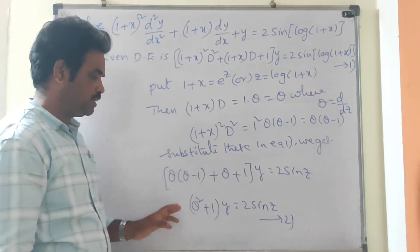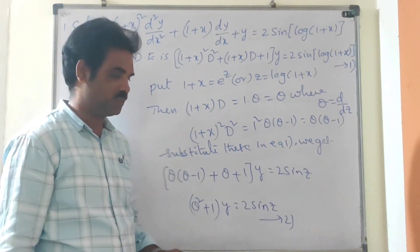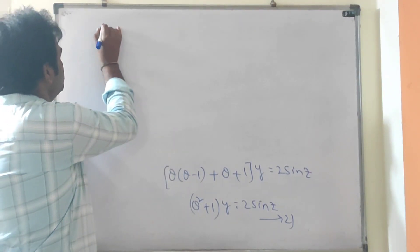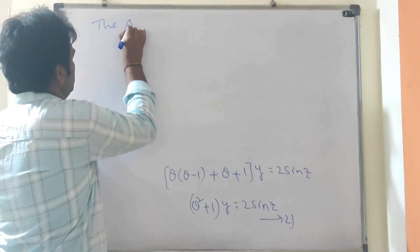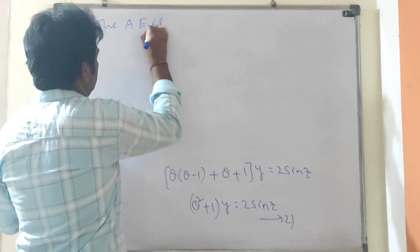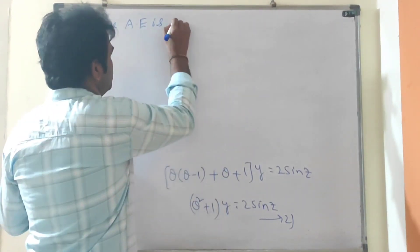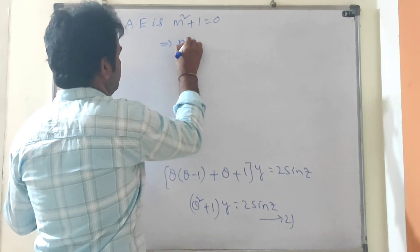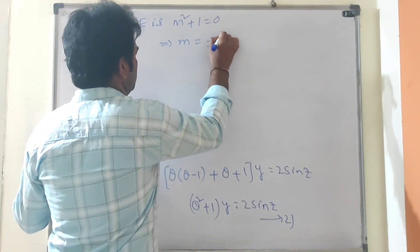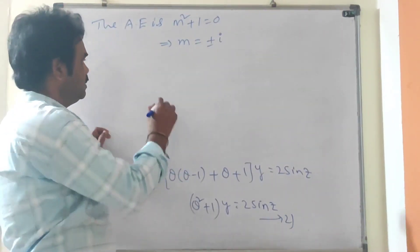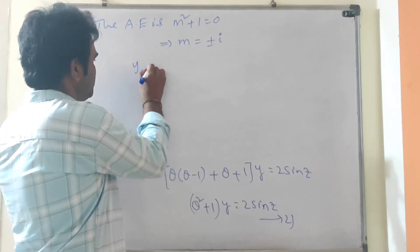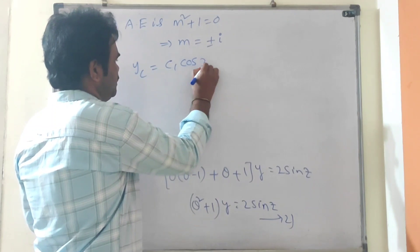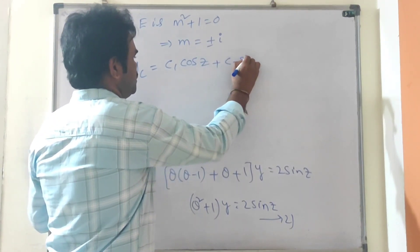This is equation 2, a linear differential equation with constant coefficients. To solve this equation, write the auxiliary equation. The auxiliary equation is m² + 1 = 0, which implies m = ±i, the complex roots. Therefore the complementary function y_c = c₁ cos z + c₂ sin z.